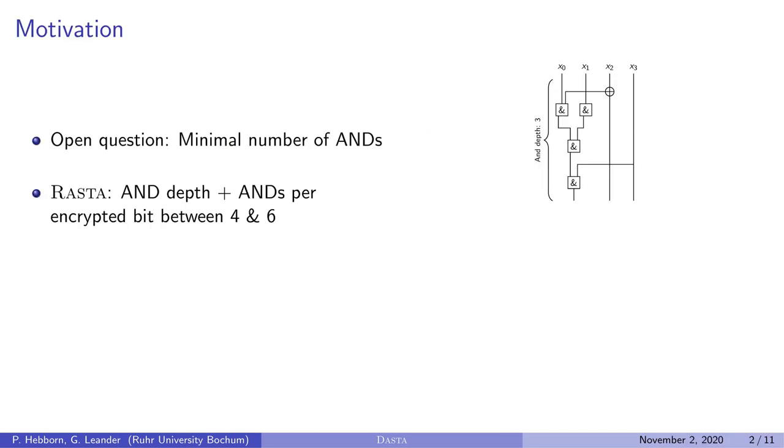An open question in research is the minimal number of AND operations the cipher needs to still ensure security. There are two different metrics. One is the AND depth. Therefore, you consider a cipher as a circuit and look at the longest path and count the number of AND gates there. For example, in the right picture we have AND depth of 3. The other metric is the number of ANDs per bit, and for that you count the total number of AND operations in the circuit and then divide by the block length. One cipher which performs very well in both metrics is the family of stream cipher RASTA. It has a very low AND depth and number of ANDs per encrypted bit between 4 and 6.